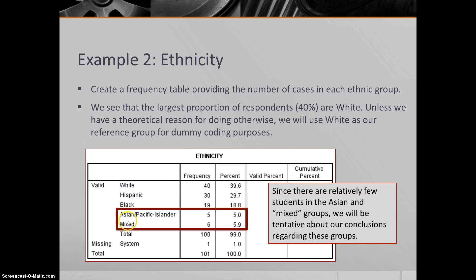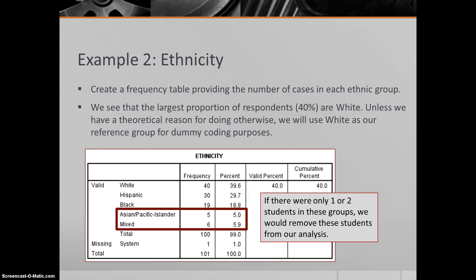Notice that there are not a lot of Asian or mixed ethnicity students. We have 5 and 6, respectively—about 5 and 6%. So we want to be really tentative about our conclusions regarding these groups. If we were to find that Asian students had the highest parental attachment, we'd want to be cautious about really trumpeting that finding since we're only talking about 4 Asian students. If we had even less than this, maybe 1 or 2 students, we might consider just removing them from our analysis altogether because we really couldn't model those differences. Here we can run this model, but we want to be tentative about our findings.